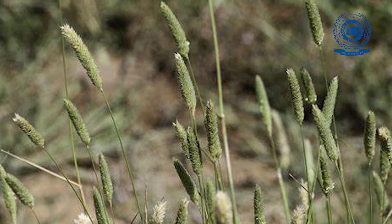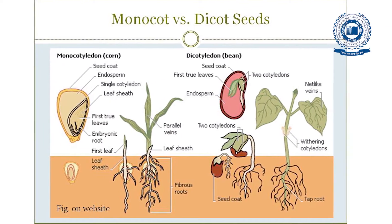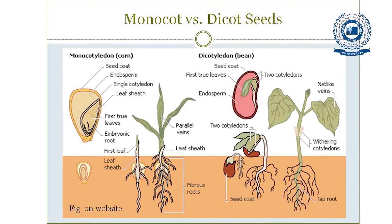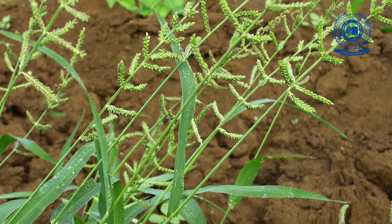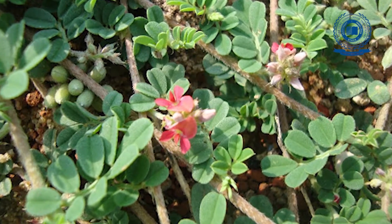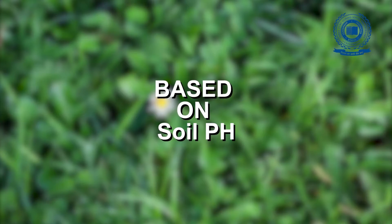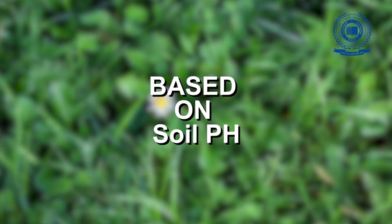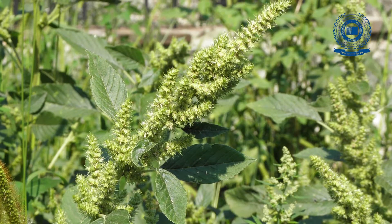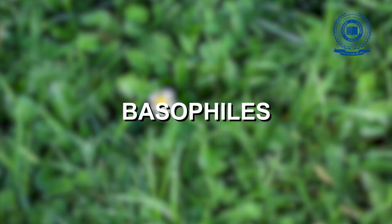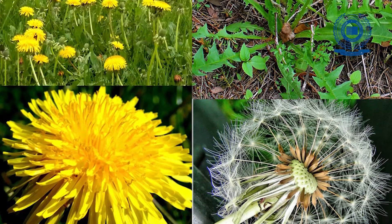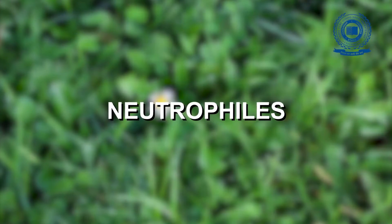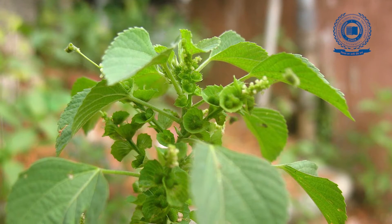Based on cotyledon number: based on the number of cotyledons a weed possesses, it can be classified as dicots or monocots. Example: Echinochloa colona is a monocot weed, and Indigofera is a dicot weed. Based on soil pH: weeds can be classified as acidophiles, which grow on acid soils — example: Rumex; basophiles, which grow on saline and alkaline soils — example: Taraxacum; and neutrophiles, which are weeds of neutral soils — example: Acalypha indica.